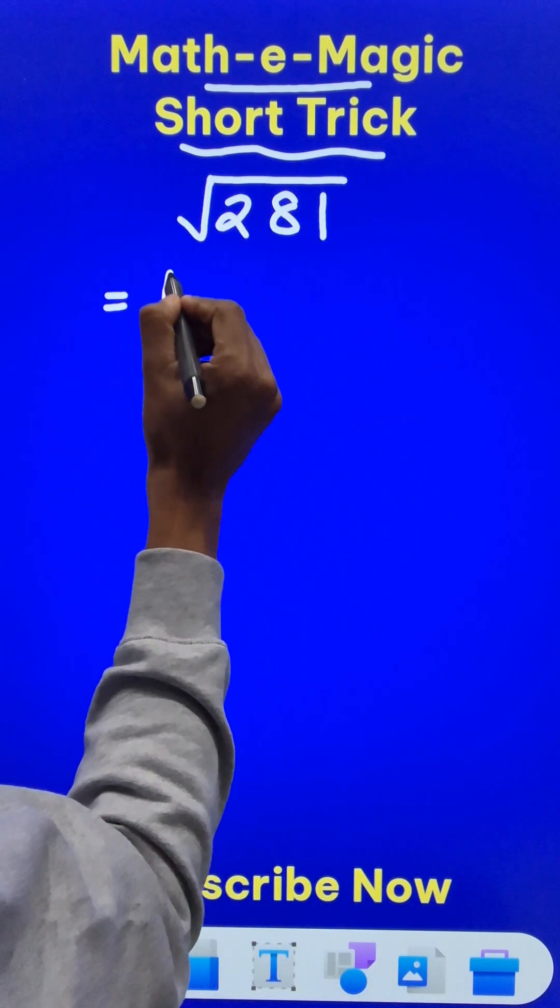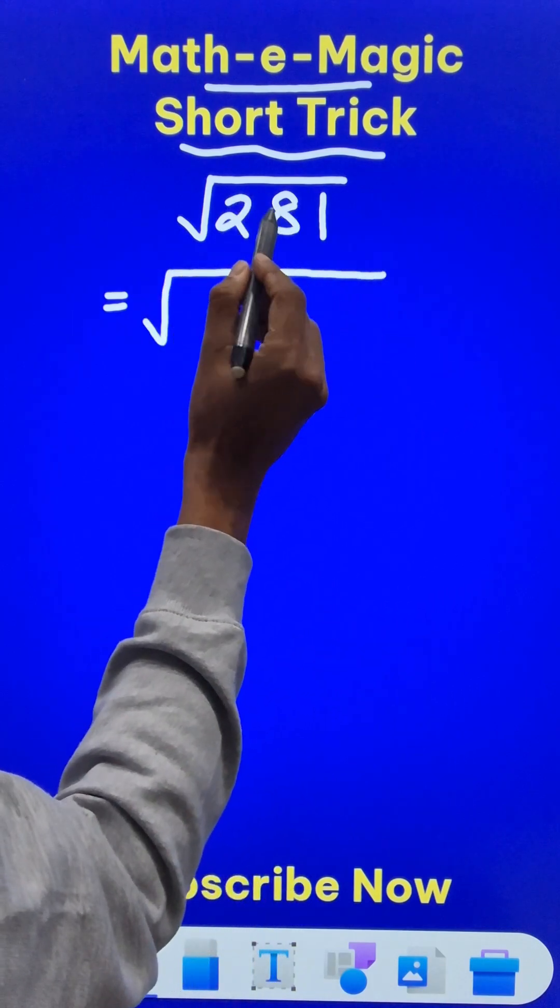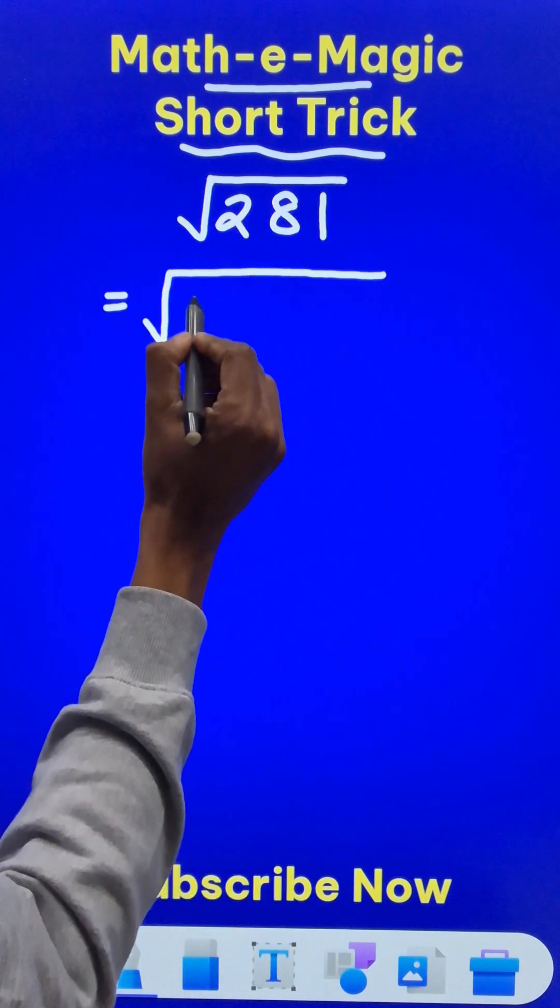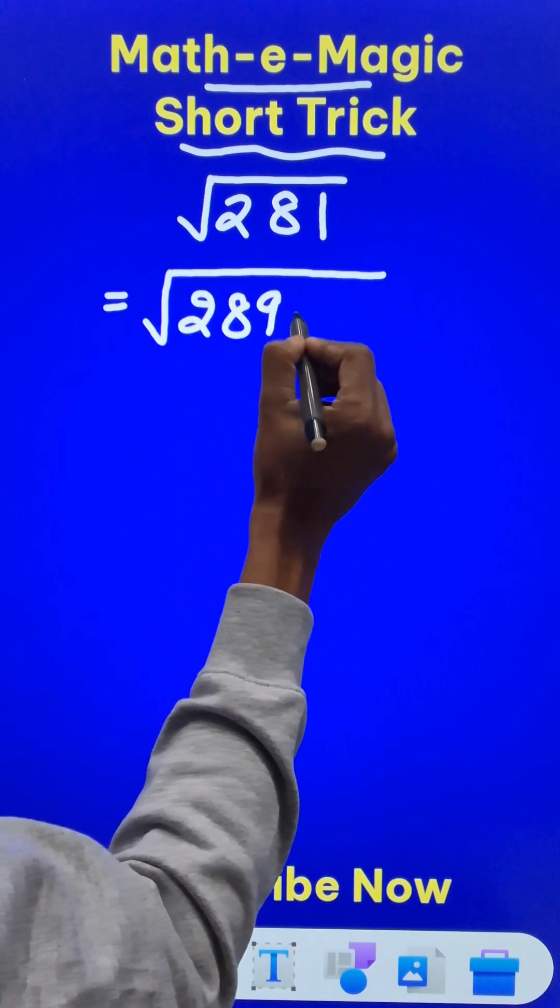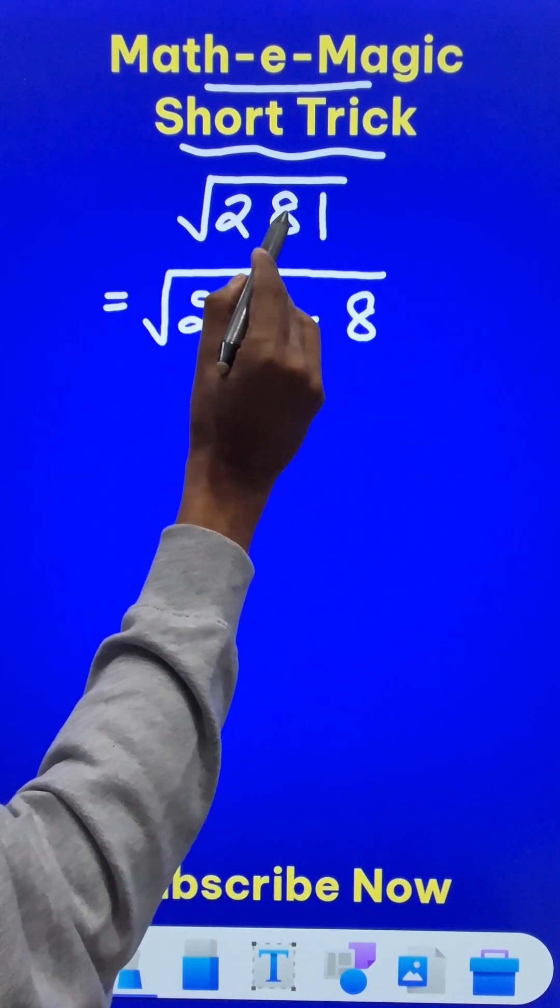Just check which is the closest square number to 281. We have 289, which is the square of 17, and if we subtract 8 from this, we get 281.